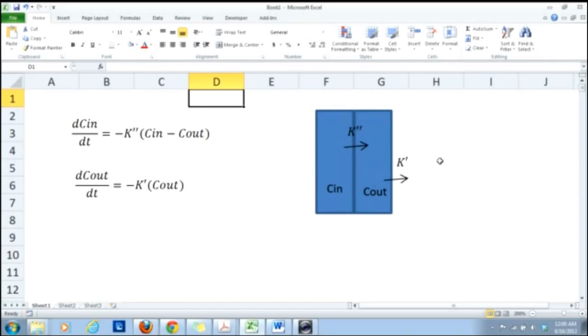The outside chamber is exposed to air so the things in the outside chamber can diffuse to open air with the diffusion coefficient of k'. And diffusion can occur from inside to outside with the diffusion coefficient of k''.